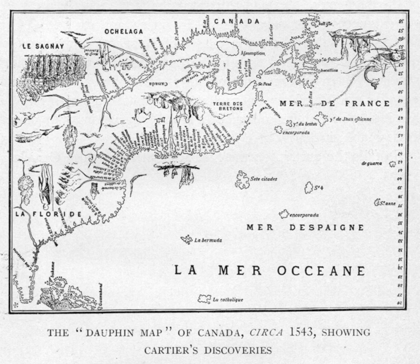At the conferences held in London to determine the form of confederation that would unite the province of Canada — now Ontario and Quebec — the province of New Brunswick and the province of Nova Scotia, a delegate from either Nova Scotia or New Brunswick proposed the name Canada in February 1867, and it was unanimously accepted by the other delegates. There appears to have been little discussion, though other names were suggested.